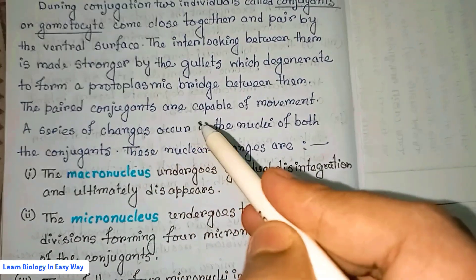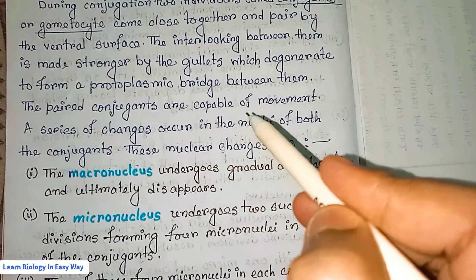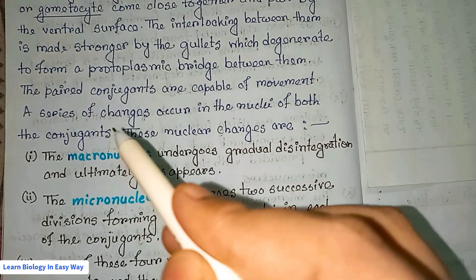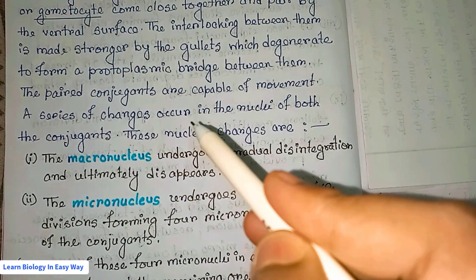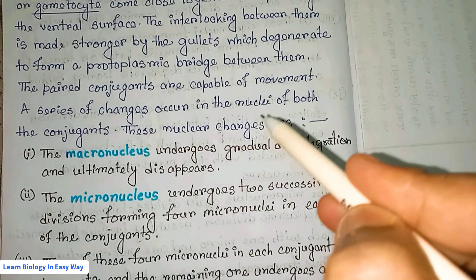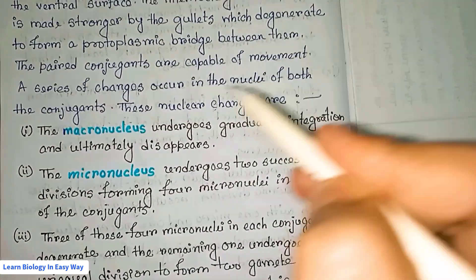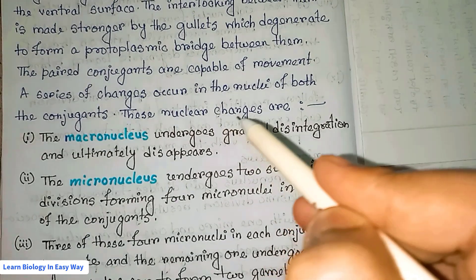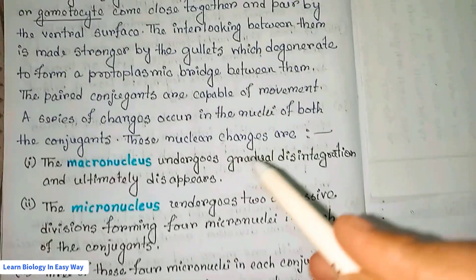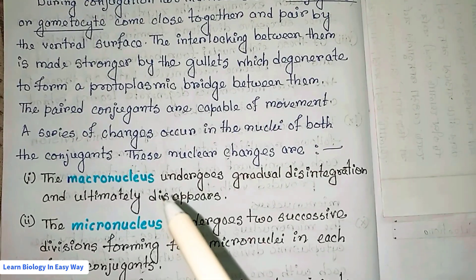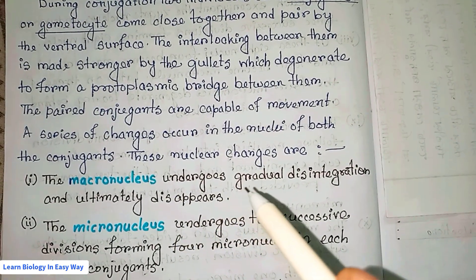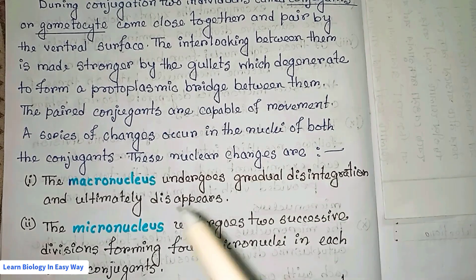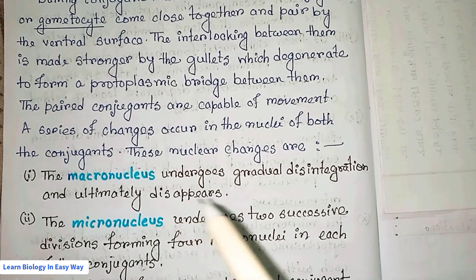The paired conjugants are capable of movement. A series of changes occur in the nuclei of both the conjugants. The macronucleus undergoes gradual disintegration and ultimately disappears.